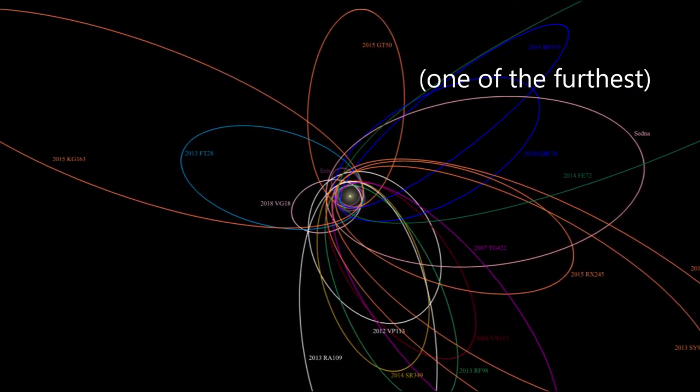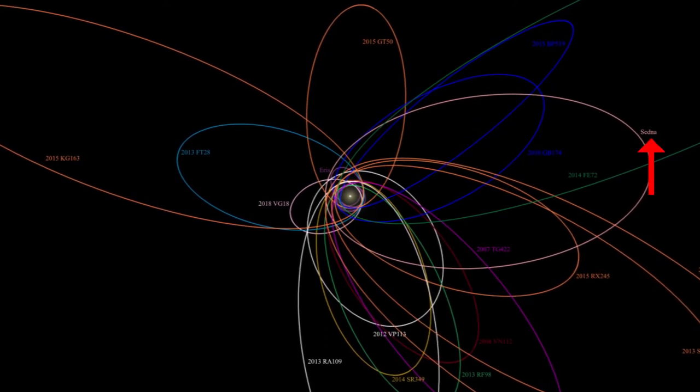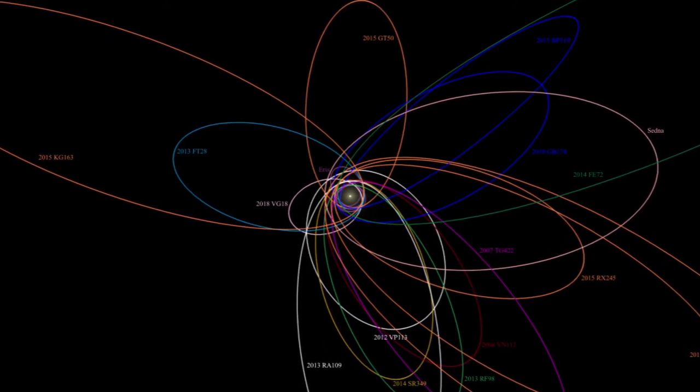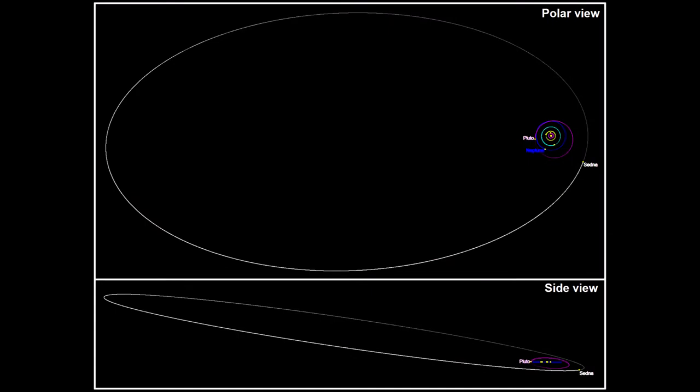The furthest of these objects, called Sedna, has a highly eccentric and elliptical orbit. When it is closest to the Sun, it is 76 astronomical units away, but when it is furthest, it is a whopping 937 astronomical units away from the Sun.